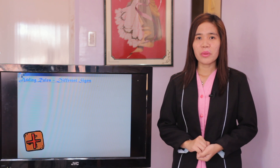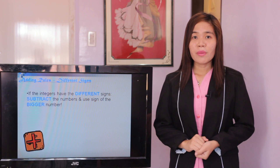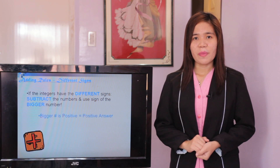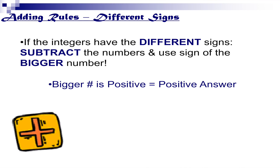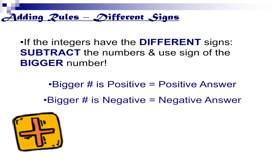Now let's go to adding rules with different signs. If the integers have different signs, subtract the numbers and use the sign of the bigger number. If the bigger number is positive, it has a positive answer. If the bigger number is negative, it has a negative answer.